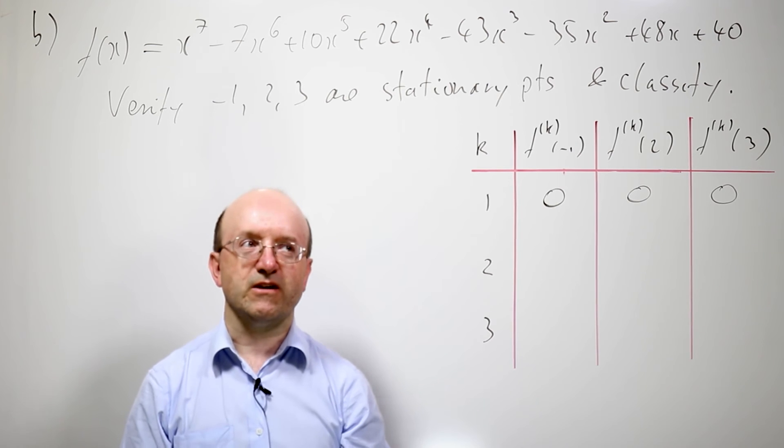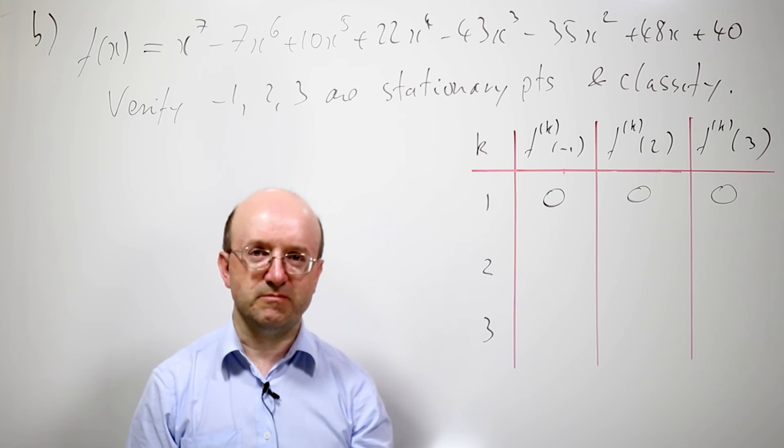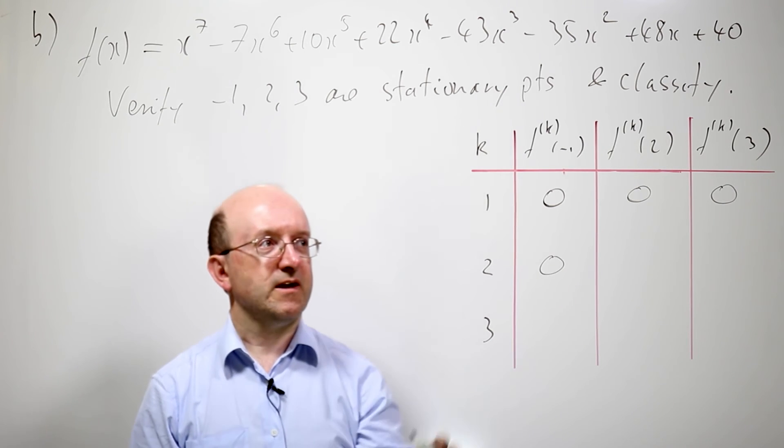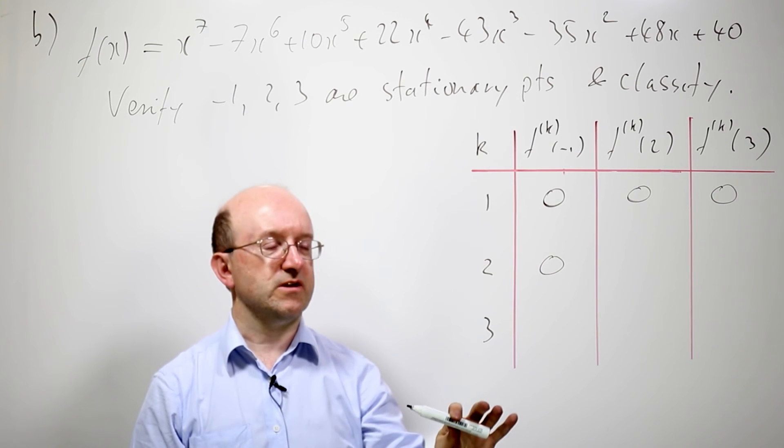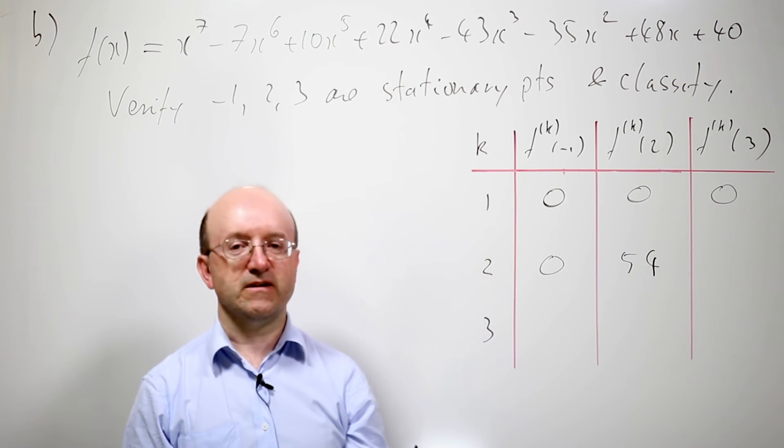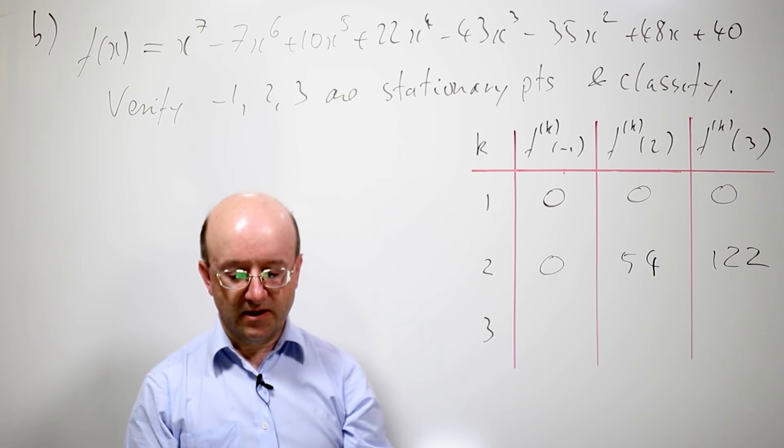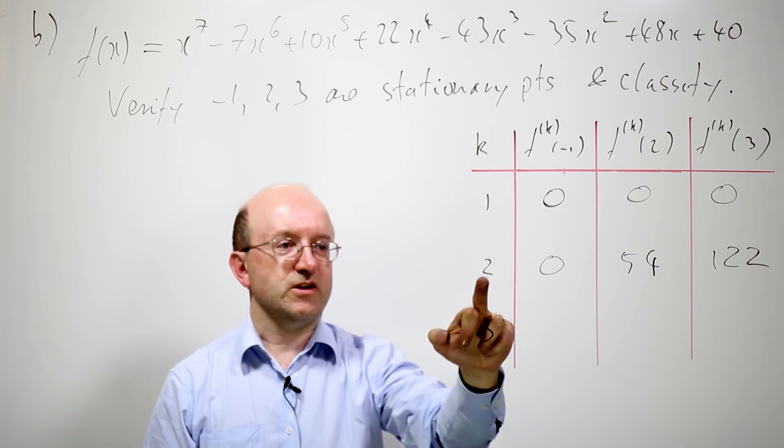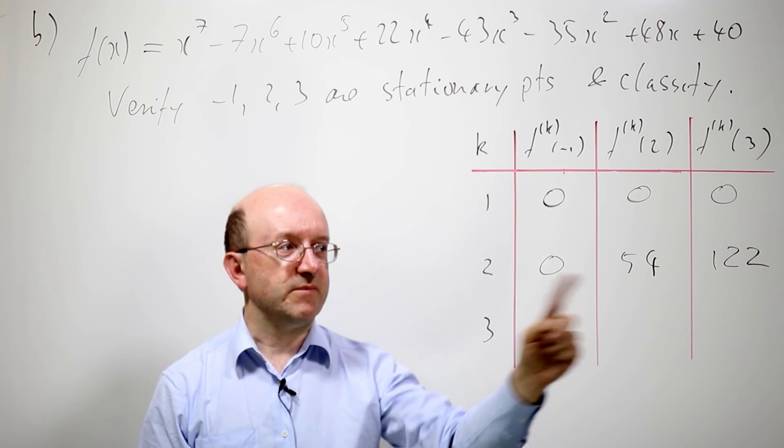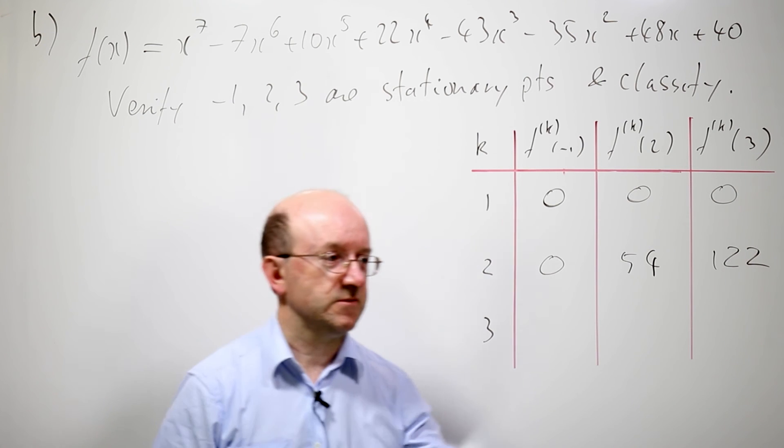So derivative vanishing verifies that they're stationary points. So the next thing we want to do is to calculate the second derivative and evaluate that. Well, write down the second derivative of this polynomial, put it into maple or whatever, find the values. You find that the second derivative at minus 1 is, again, 0. But the second derivative at 2 turns out to be 54, not 0. And the second derivative at 3 turns out to be, what's positive, it's 122. So this is telling us that since it's an even derivative that's not 0 first, that tells us we've got a maximum or a minimum. And because we've got positive numbers here, that tells us that what we have are minima. So these are two minima.